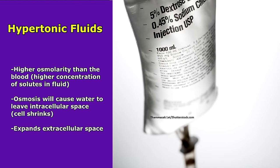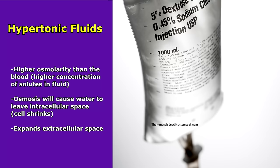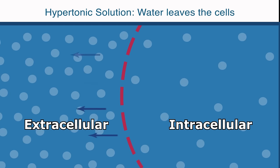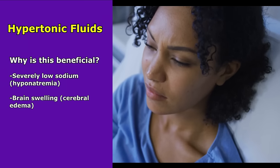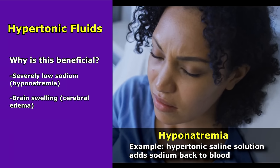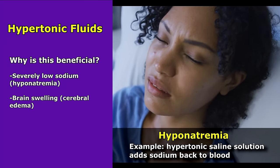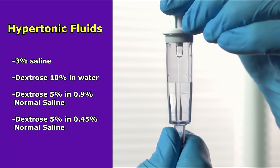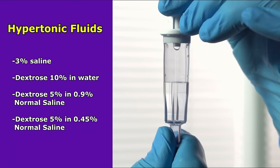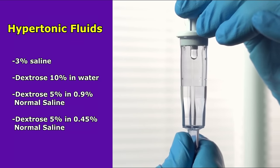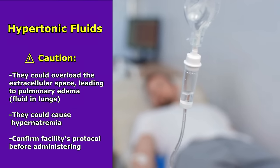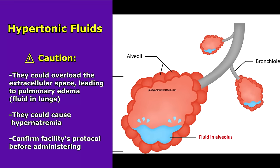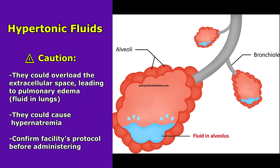Hypertonic IV solutions have a higher osmolarity than the blood — a higher concentration of solutes in the fluid. Because of this, osmosis will cause water to leave the intracellular space, which can shrink the cell and help expand the extracellular space. This is beneficial for patients with severe hyponatremia — very low sodium in the blood — or brain swelling, known as cerebral edema. Some solutions considered hypertonic include 3% saline, dextrose 10% in water, dextrose 5% in normal saline, and dextrose 5% in half normal saline.